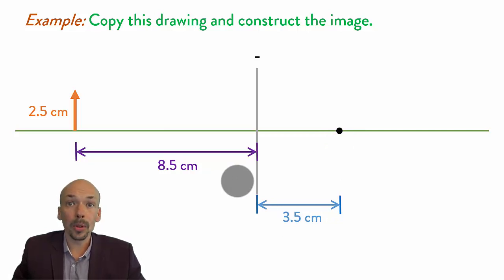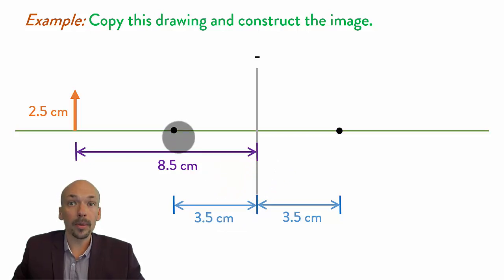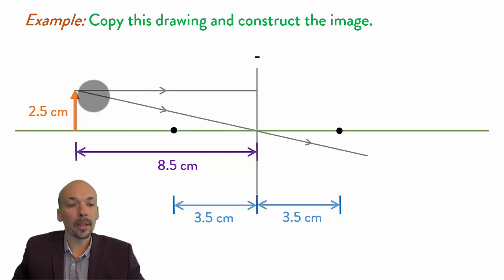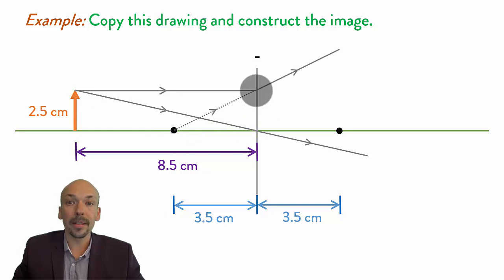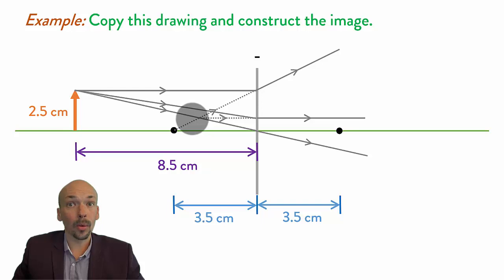First, you also need to draw the other focus point on the other side of the lens, also 3.5 centimeters away from the lens. Now you can construct the image. The first principal ray goes through the optical center and is unchanged. The second principal ray goes parallel to the principal axis and then goes away as from this focus. The third principal ray goes to this focus point, and when it hits the lens, it will continue on parallel. We have where they all three intersect — so this is where our image will be.